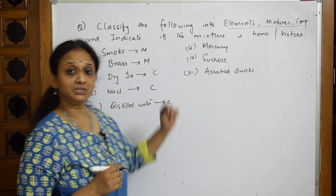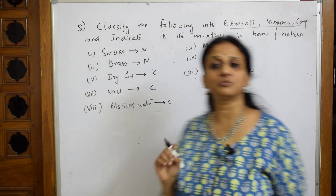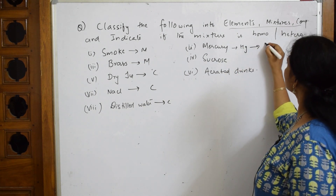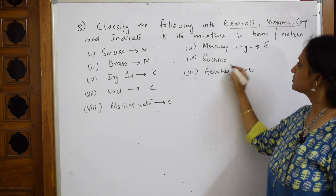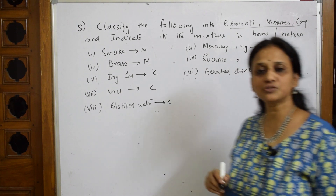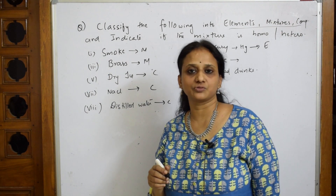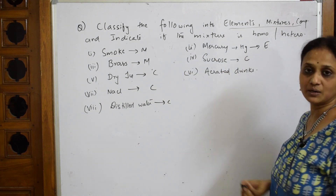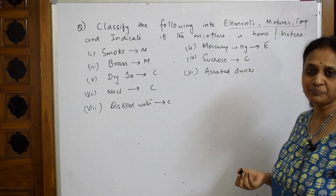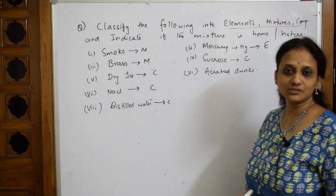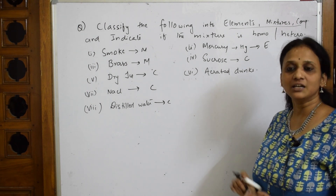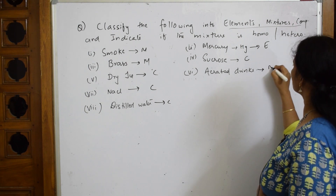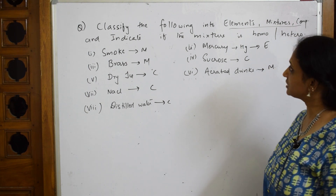Mercury is the purest form — it is in elemental form, that is Hg — so it is an element. Sucrose is a combination of glucose and fructose, so it comes under the category compound. Aerated drinks have compressed carbon dioxide present in them, so they are a mixture.